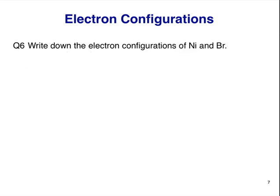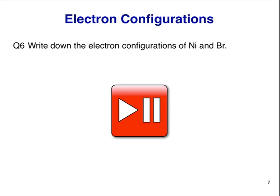Final question, question 6. Write down the electron configurations of nickel and bromine. Pause here and write down your configurations.